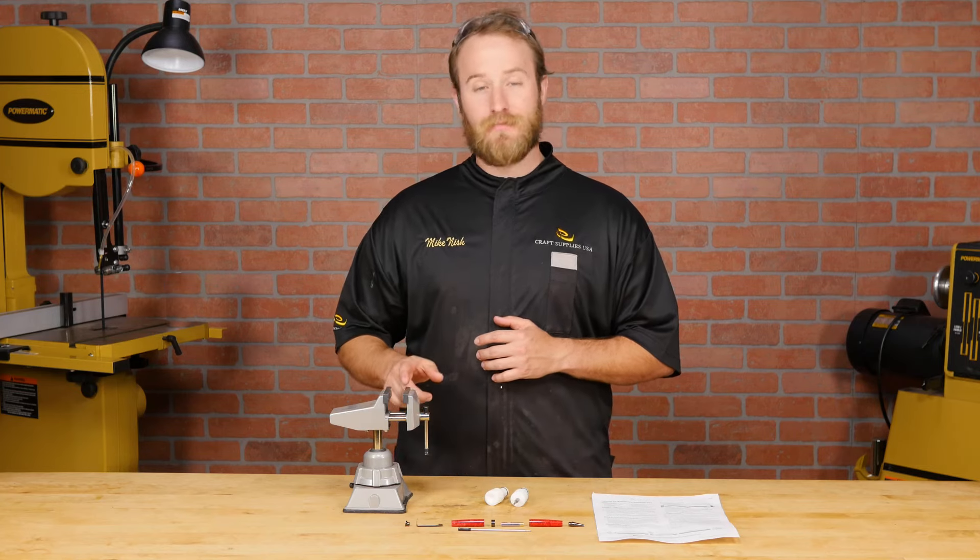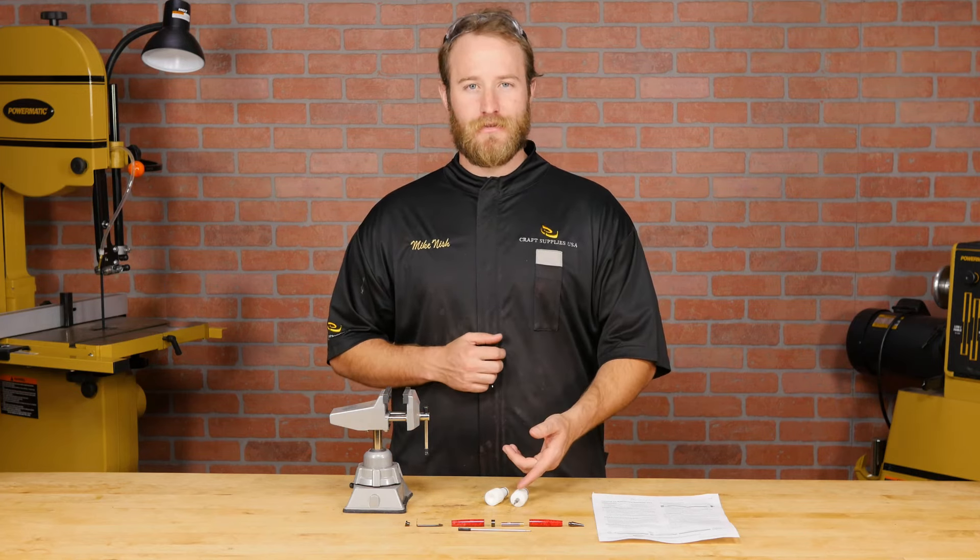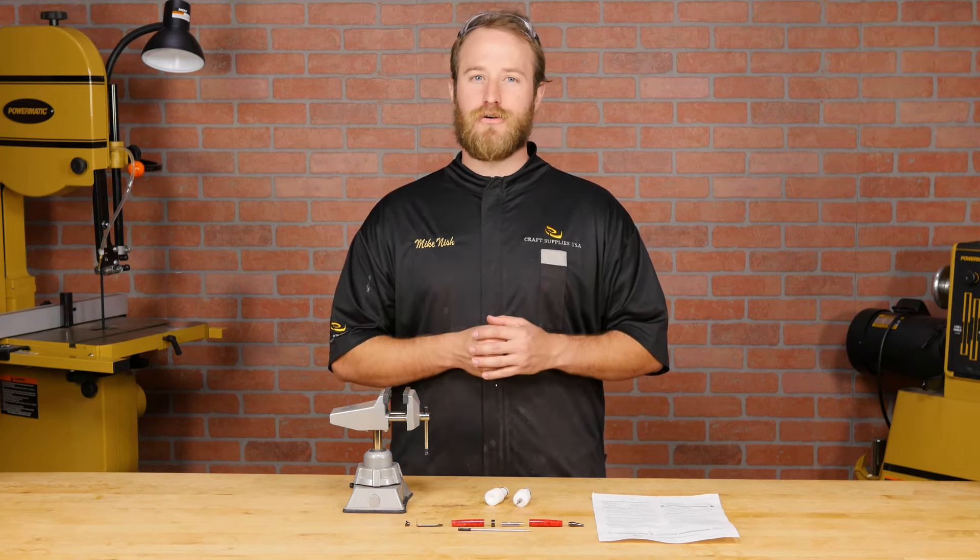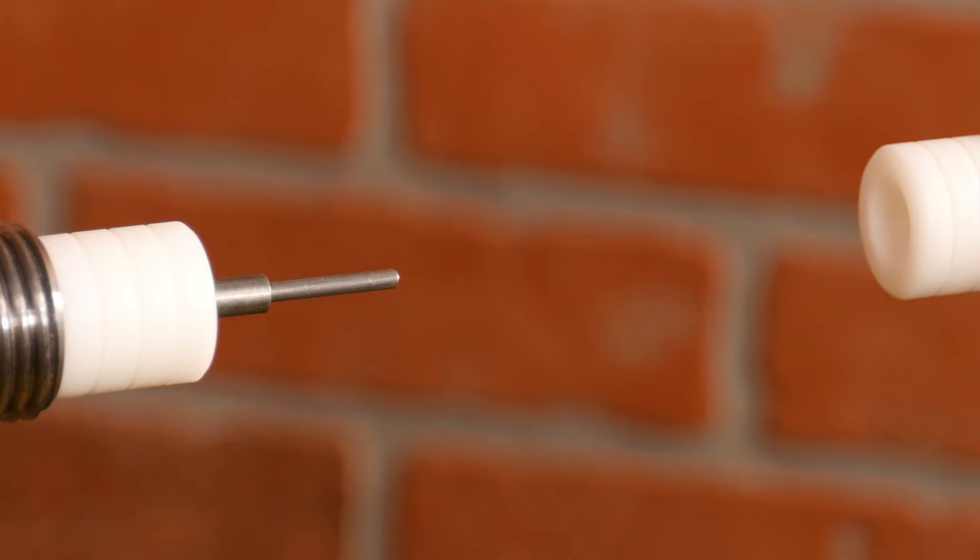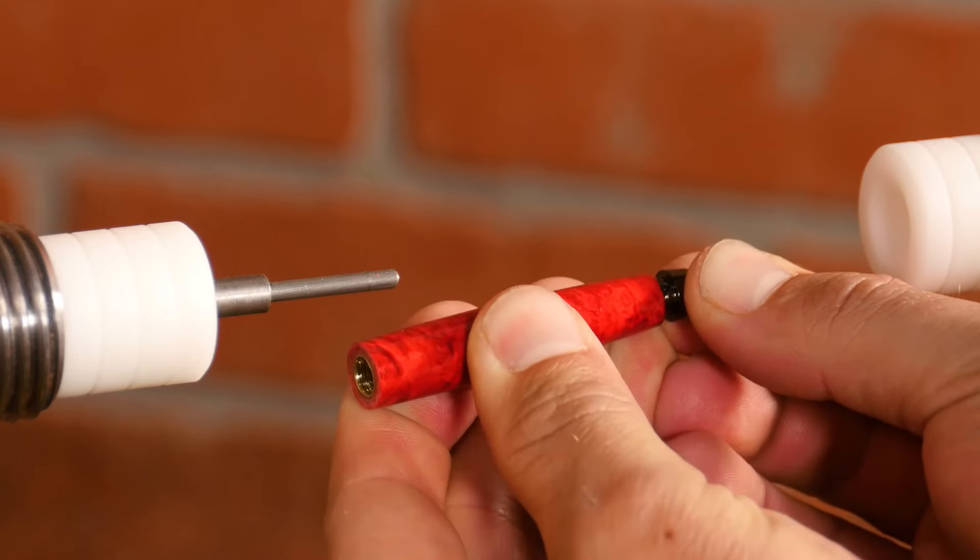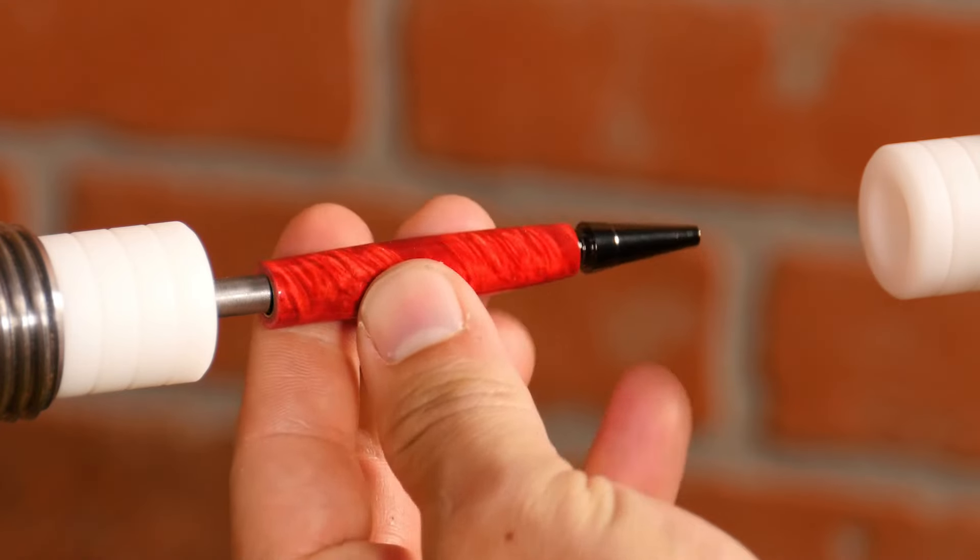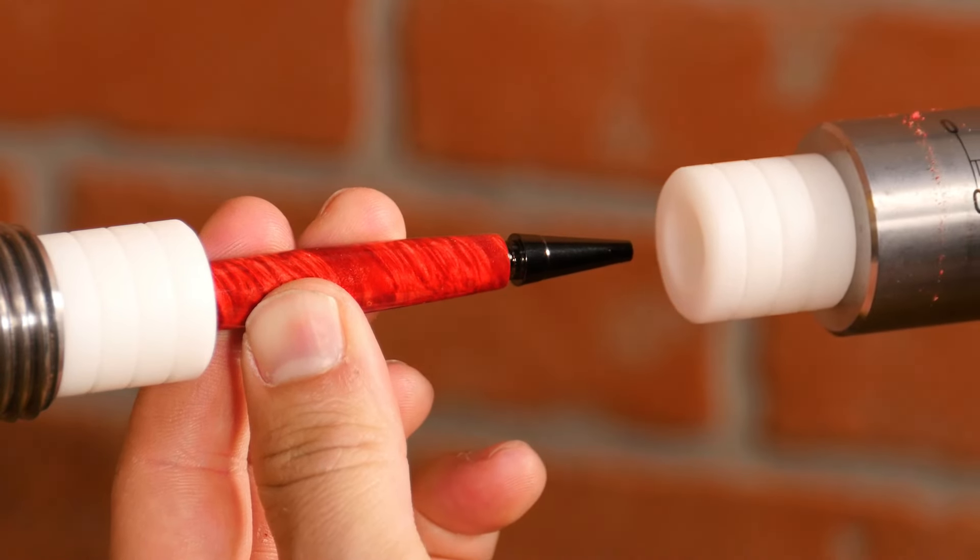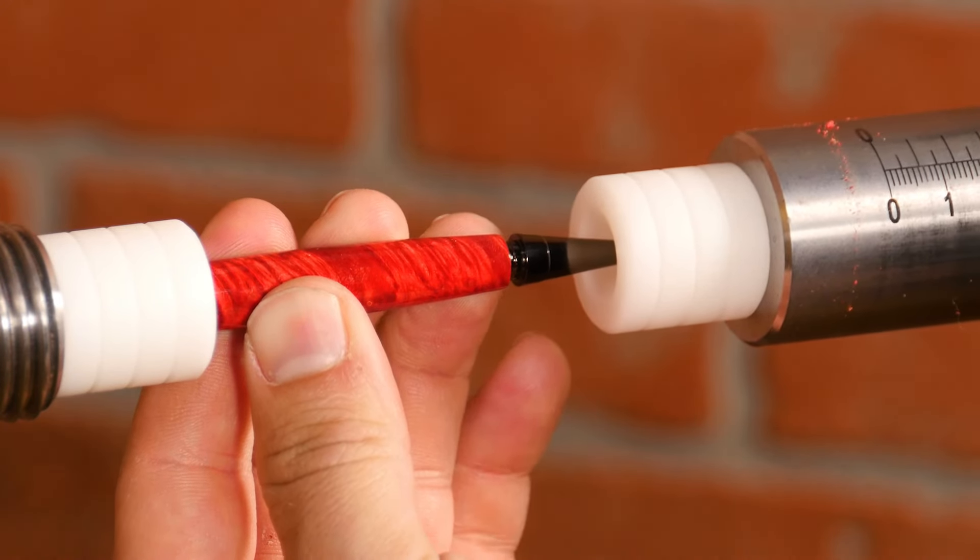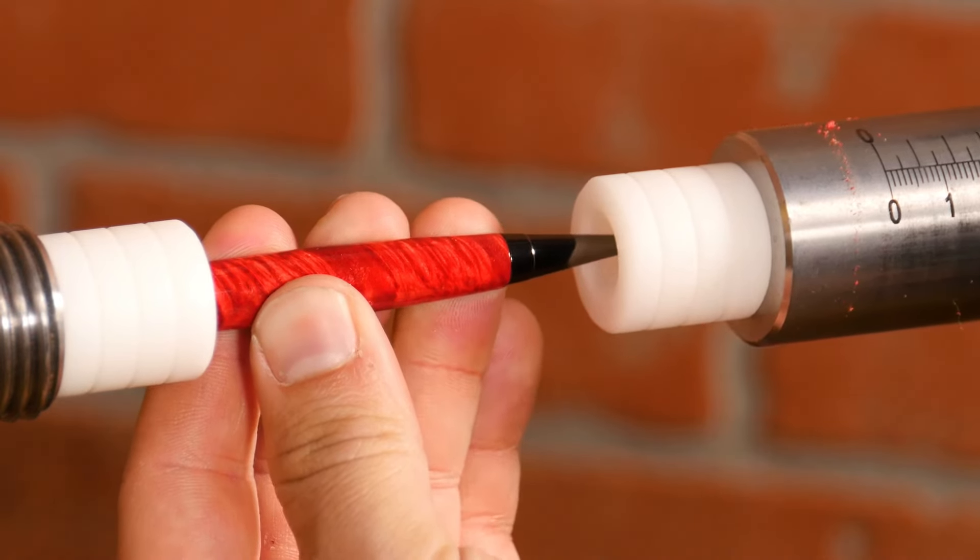The pen can be assembled using a simple shop vise, but I like using the pen ultimate assembly tool. It gives me more control when I'm pressing in the parts and the plastic pieces don't scratch the parts. It's a good idea to start the parts by hand to make sure they're square, then finish with the press. If a part gets pressed in at an angle, it can split your turning or crack the CA finish, so use precision here and avoid any mistakes.